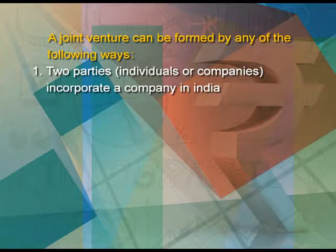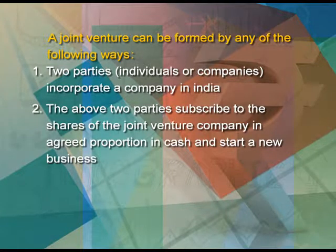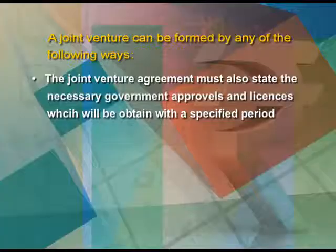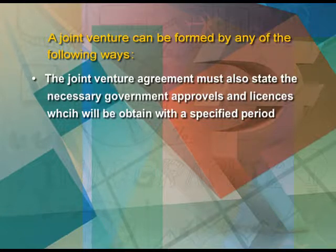A joint venture can be formed by any of the following ways. First, two parties — individuals or companies — incorporate a company in India. Second, the two parties subscribe to the shares of the joint venture company in agreed proportion in cash and start a new business. Thirdly, a promoter shareholder of an existing Indian company and another party — either an individual or a company — may collaborate to jointly carry on the business of that company. All joint ventures require government approvals if a foreign company or NRI is involved. A joint venture must be based on a memorandum of understanding signed by both parties, and the joint venture agreement must also state the necessary government approvals and licenses to be obtained within a specified period.